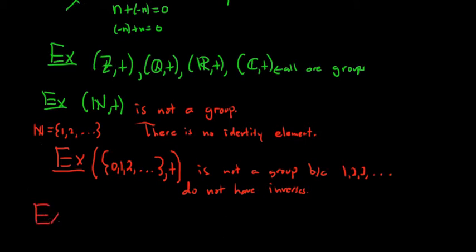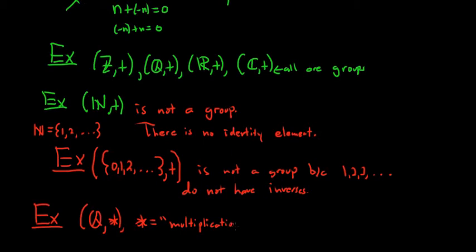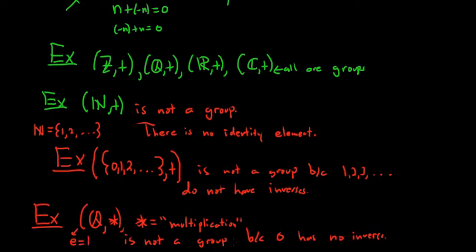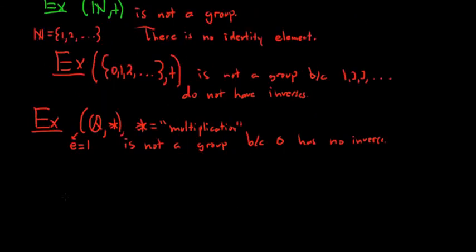It's important to see lots of examples of groups. Let's look at the rational numbers under multiplication. This is not a group because 0 has no inverse. The identity element under multiplication would be 1, but there's no number you can multiply by 0 to get 1. So 0 does not have an inverse in this set.